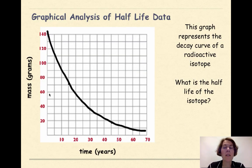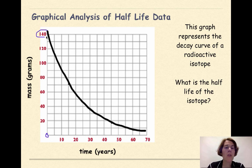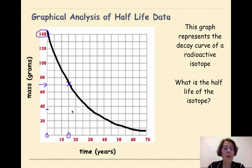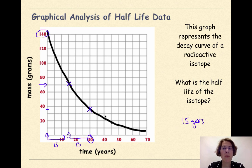Now let's talk about the graphical analysis of half-life data. This graph represents the decay curve of a radioactive isotope — what is the half-life of the isotope? At time 0 we have 140 grams. We take 140 and divide it in half to get 70 grams, then match that point on the graph, which reads 15 years. Checking again: taking 70 and cutting it in half gives us 35 grams, which intersects the line at 30 years. The difference from 15 to 30 is another 15, confirming that the half-life of this isotope is 15 years.